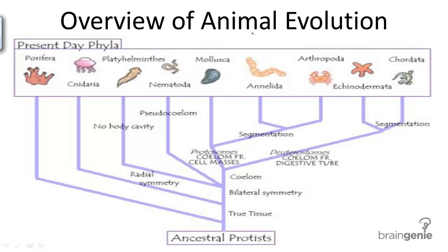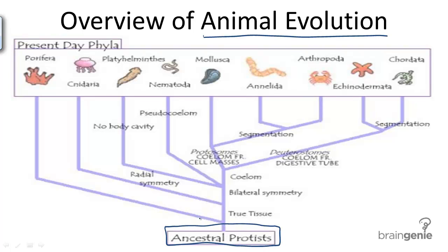How did animals evolve? Let's start with the ancestors of animals. The ancestors of animals were likely one-celled, tiny primitive organisms living in the oceans. These protist-like organisms evolved into the first eukaryotic, multicellular, animal-like organisms about 1.5 billion years ago.